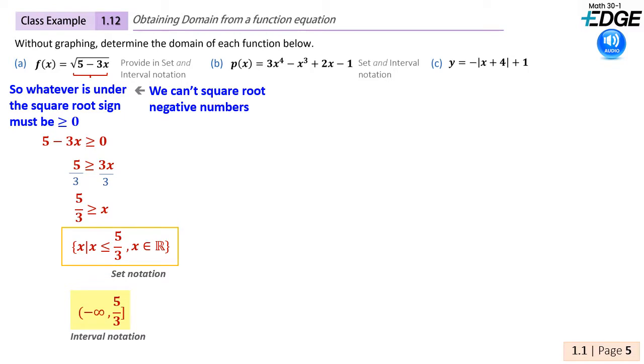In order to determine the domain of part A, we stated that the radicand must be positive or equal to zero. We then isolated x by adding 3x to each side and dividing by its coefficient of 3. This said that x must be less than or equal to 5 thirds.